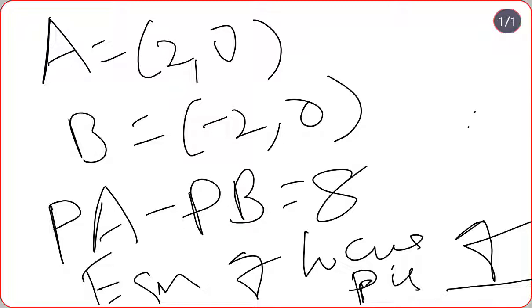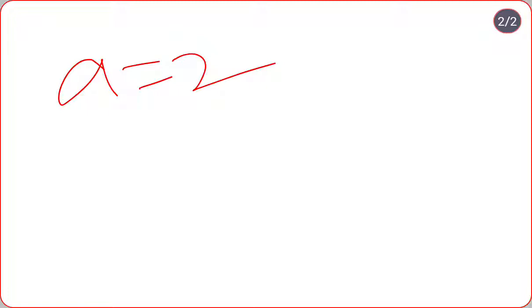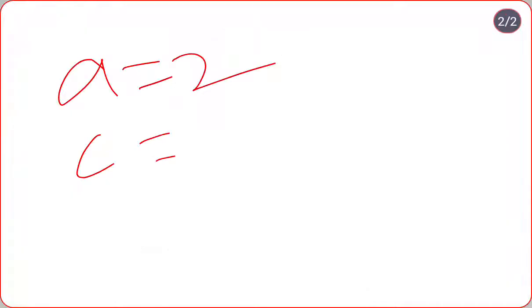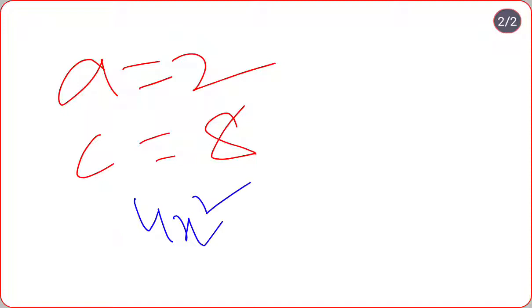In the question, the value of 'a' is given as 2 and the value of 'c' is given as 8. So what I will have to do is substitute this 'a' and 'c' value into my required formula. My required shortcut formula is: 4x² / c², where c is the constant.